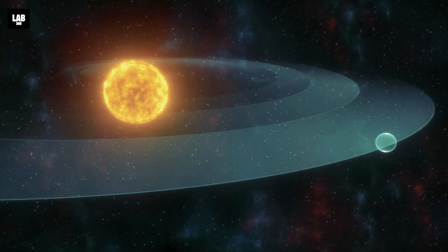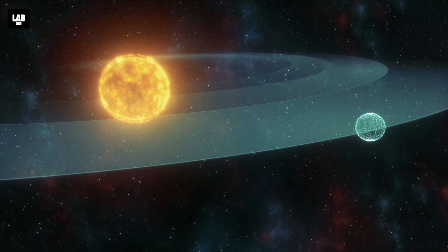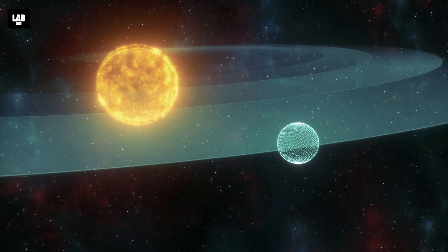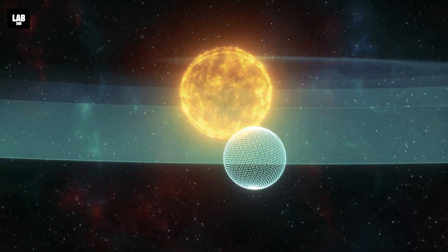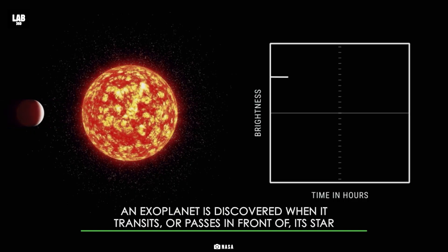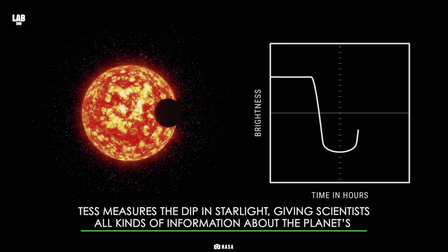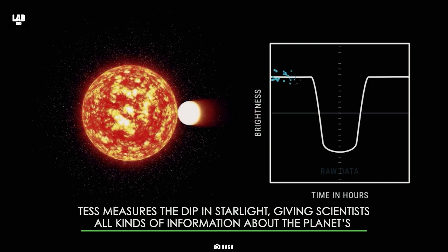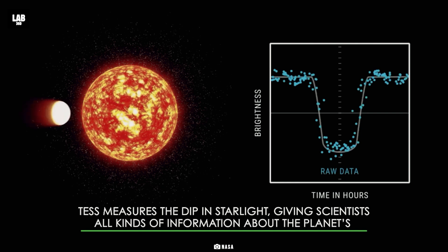TOI-715 b was spotted as it crossed the face of its parent red dwarf star, TOI-715, during its 19 Earth day orbit. TESS has been using the tiny dips in light that planets cause as they move across the face of their parent stars to find exoplanets since it launched in 2018.